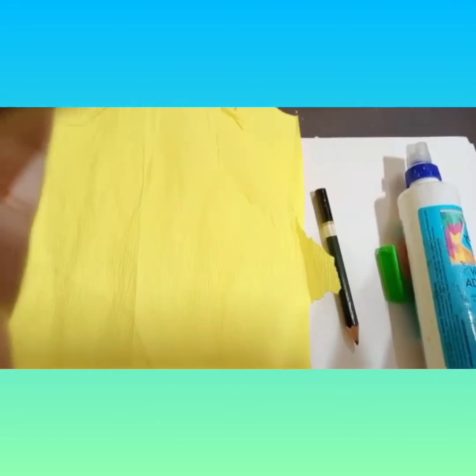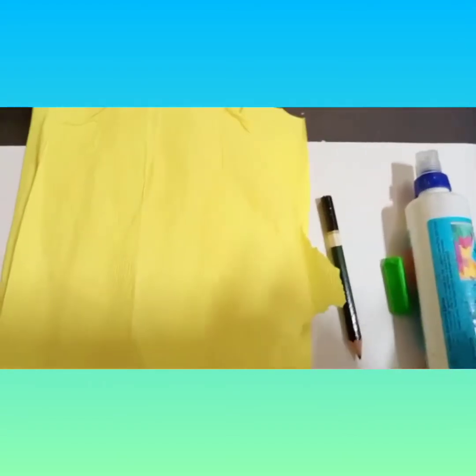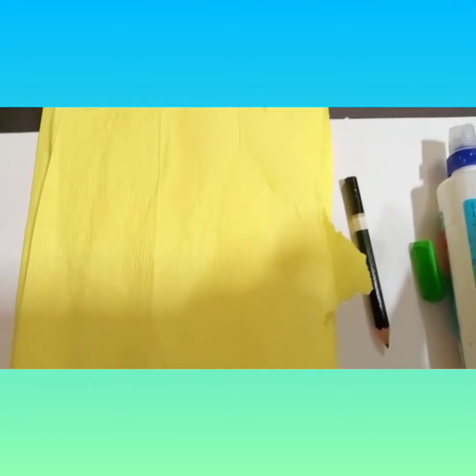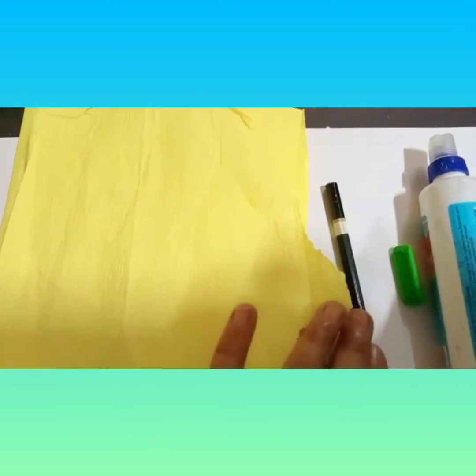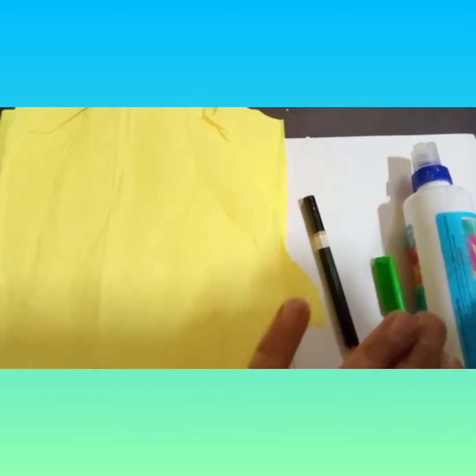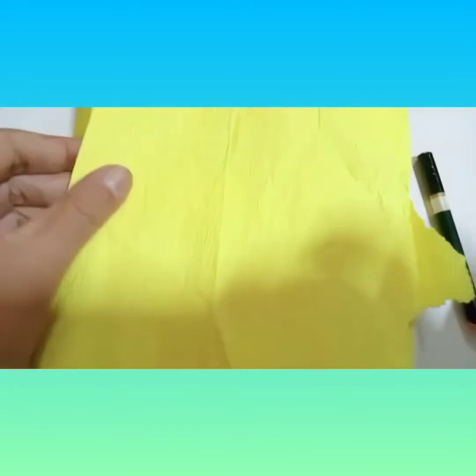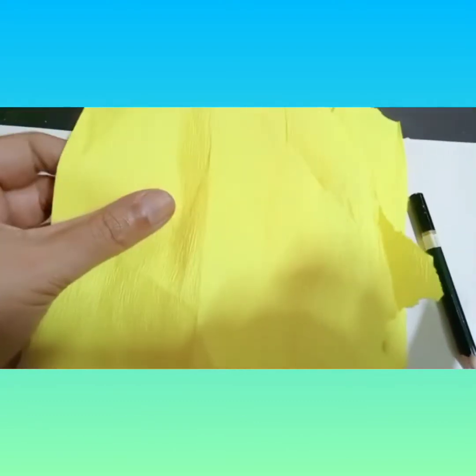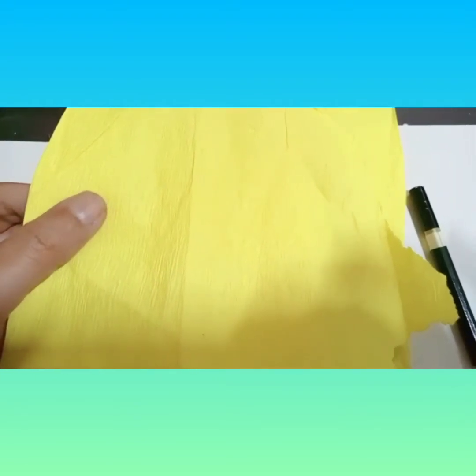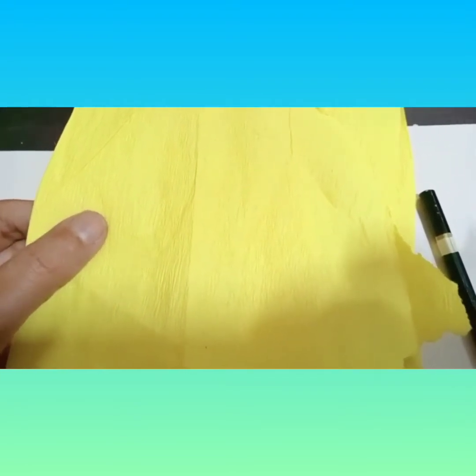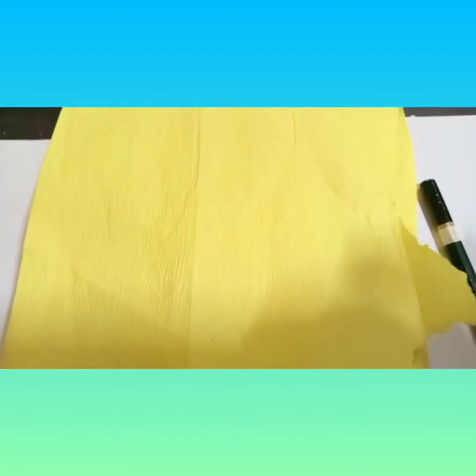So let's see what materials we require for our activity. We are going to make corn. So for that we need first our drawing book, pencil, fevicol, green color crayon, and we need this crepe paper. Can you see this? This is called crepe paper. If you don't have this paper you can use normal white paper and color it in yellow color.